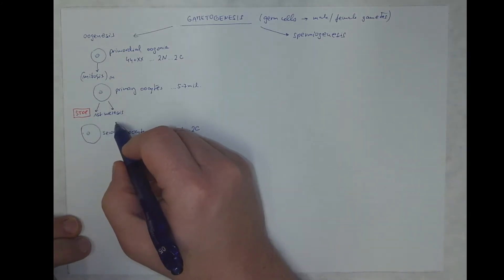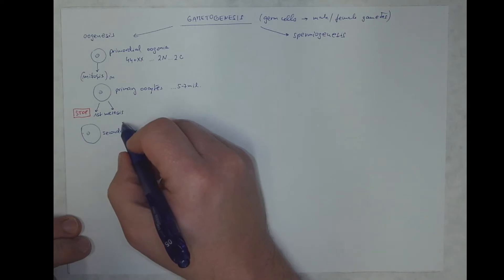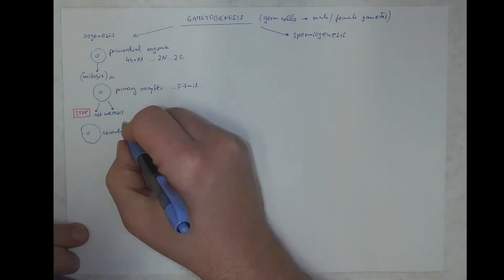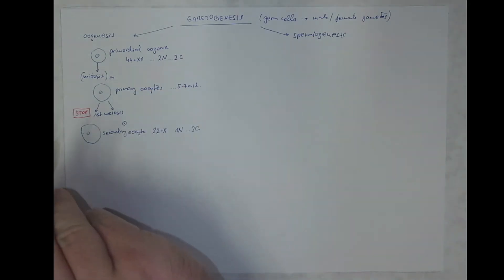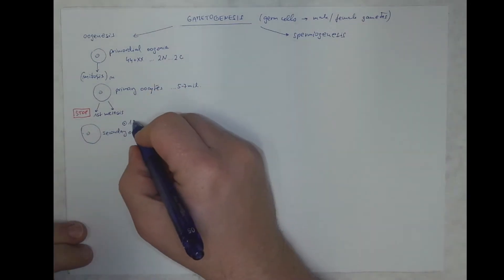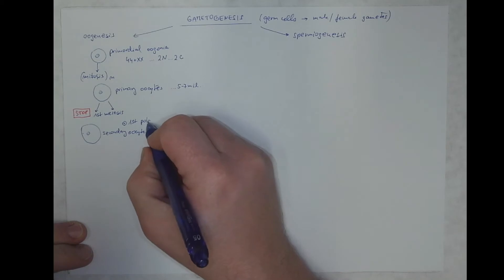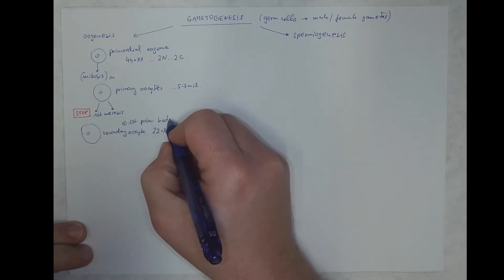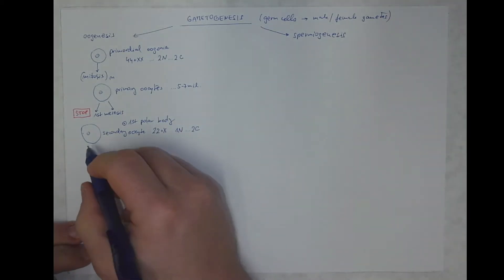This first meiosis is asymmetrical, so the other cell takes only little cytoplasm and it's called first polar body. The secondary oocyte also enters the second meiotic division,